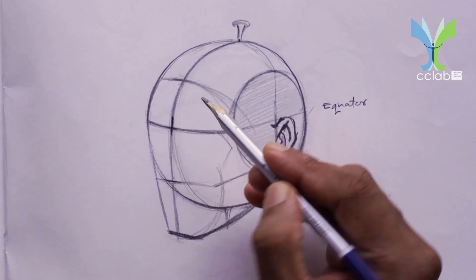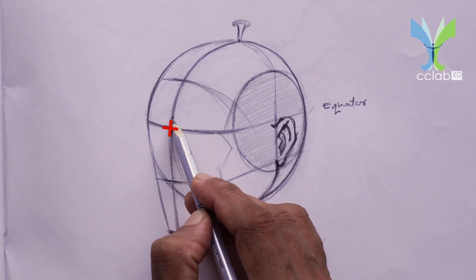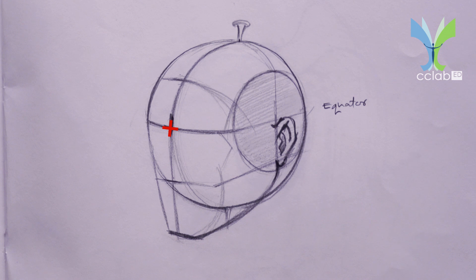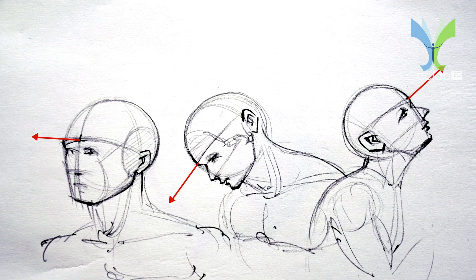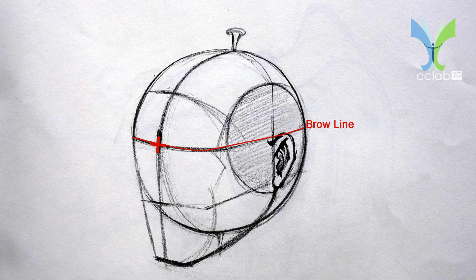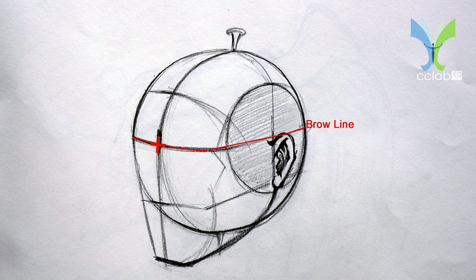The cross or the point where the brow line crosses the middle line of the face is the key point of the construction of the whole head. It determines the position of the facial plane on the ball or the angle from which we see the face. Also the brow line around the head we can locate the ears.